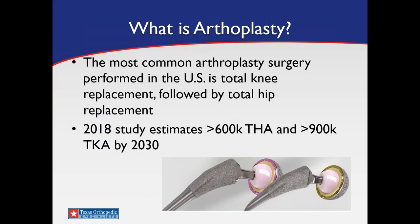What is arthroplasty? The most common arthroplasty surgery in the US is total knee, and the second is total hip, which is what we'll discuss today. 2018 estimates show about 600,000 total hips by 2030. This is a picture of the total hip replacement I use — you'll notice the stem that goes down the femur, the ingrowth surface, the femoral head, the liner, and the acetabular shell that goes into the socket.